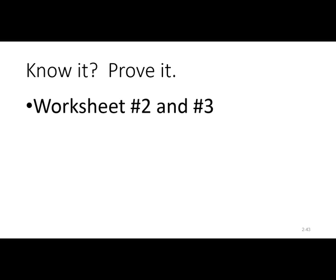Even if you print worksheet three and you're totally lost — which a lot of students are when they first start journal entries — try the first entry, just try it. If you're not sure, look back at Transaction 1, because the first transaction on worksheet three looks a lot like Transaction 1. Try each transaction on worksheet three separately. Don't just look at the answers or copy from the textbook. I want you to train your brain to figure out how to do these journal entries. Eventually you will get it, but it is a matter of putting in the effort and trying until you eventually get it done.